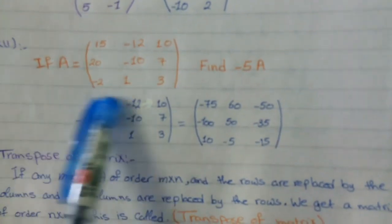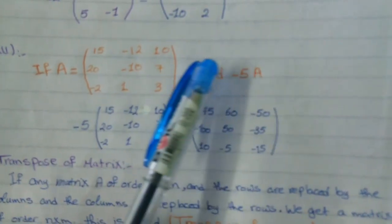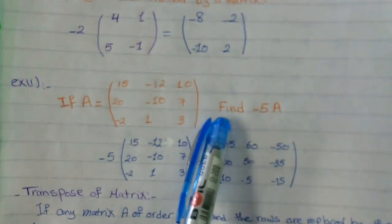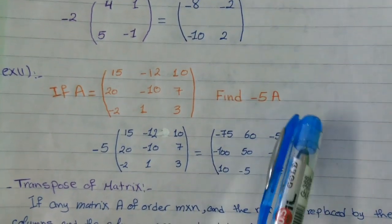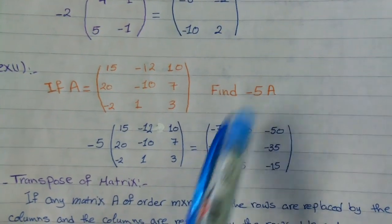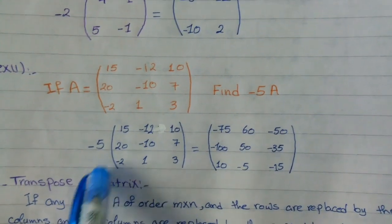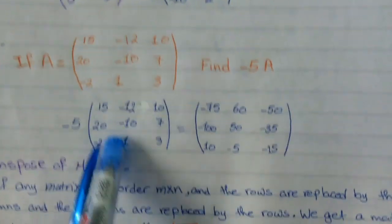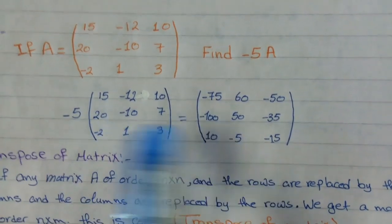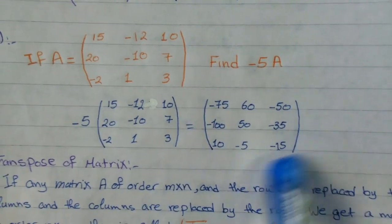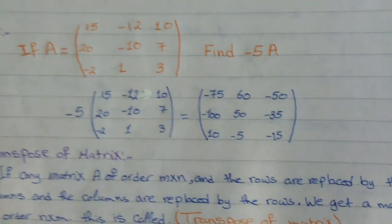Here is an example: I give you matrix A and I want you to find negative 5A. What you are going to do is multiply each element by negative 5. With the calculator, you will get the answer.